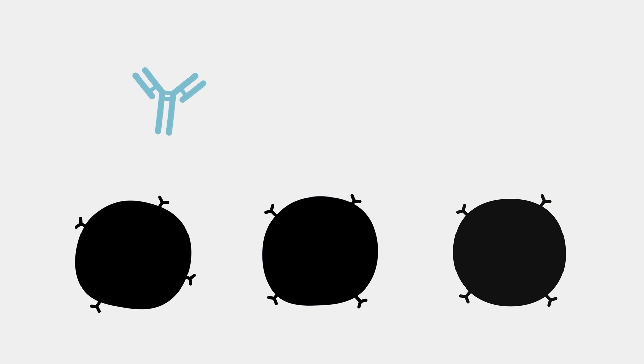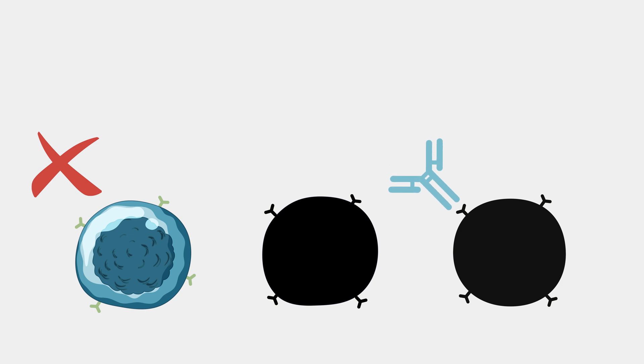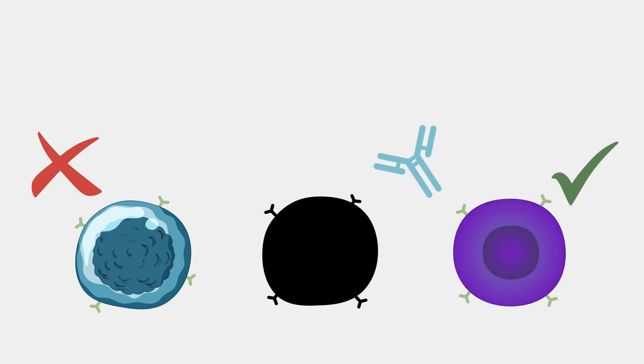This is called immunophenotyping. It tells us the cell of origin and how mature, how differentiated the leukemic cell is — and whether these are really myeloid leukemias. Not so long ago, false diagnostics was about 30%, meaning 30% of patients were not correctly diagnosed. That has vastly improved because of flow cytometry.